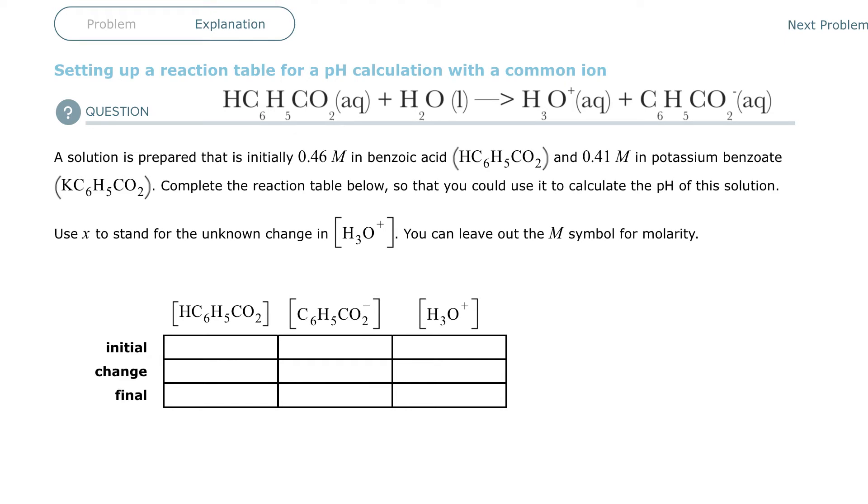So we need to know the initial molarities of each, and the easy one, of course, would be the hydronium because it's on the right. Hydronium is on the right, so there is nothing there, so it's going to be zero.